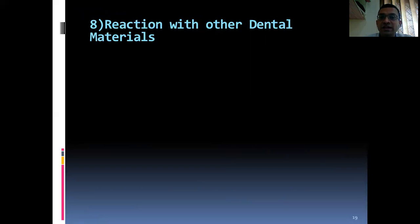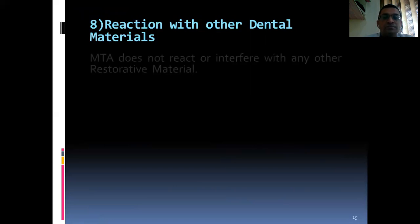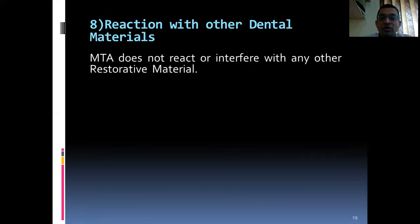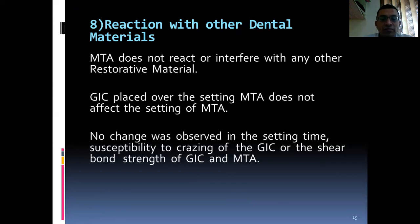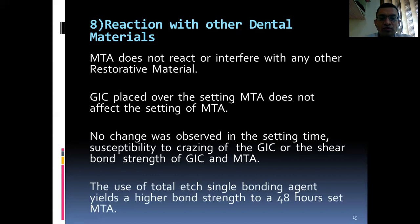Reaction with other dental materials: MTA does not react or interfere with any other restorative material. GIC when placed over the setting MTA does not affect the setting of MTA. There was no change observed in the setting time, susceptibility to creasing of the GIC, or the shear bond strength of GIC and MTA. The use of total-etch single bonding agent yields a higher bond strength to 48-hour set MTA.